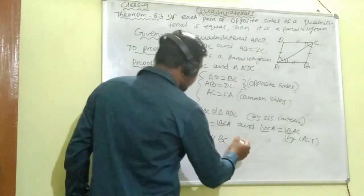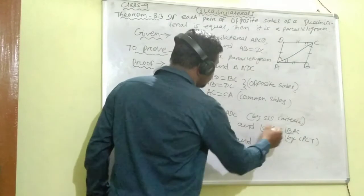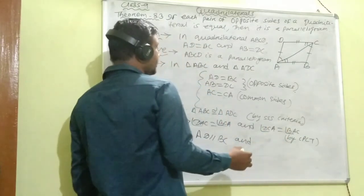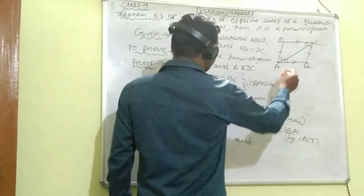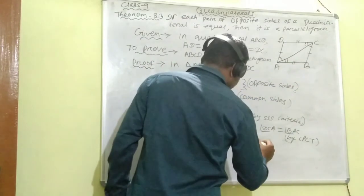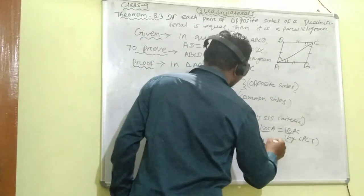Similarly, we will write here angle DCA equals angle BAC, hence AB parallel to DC.